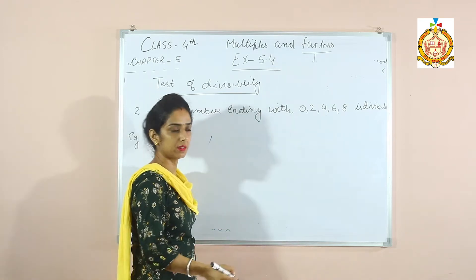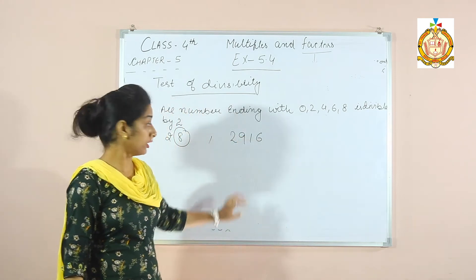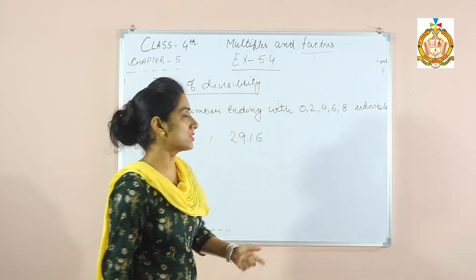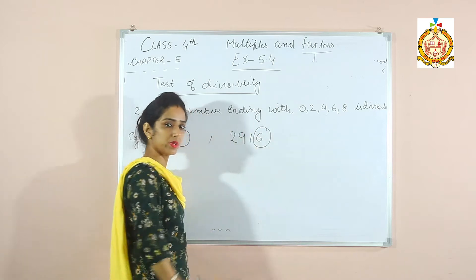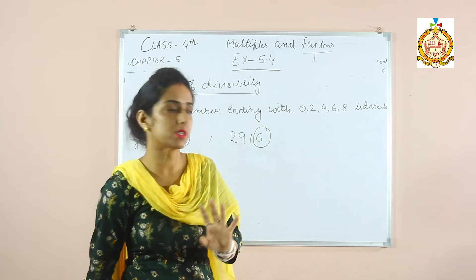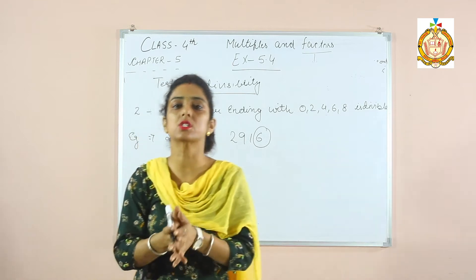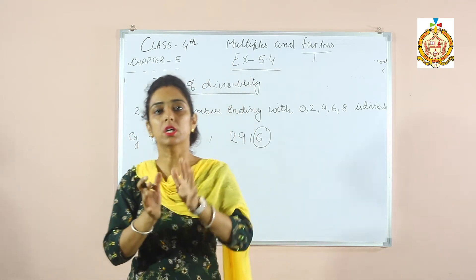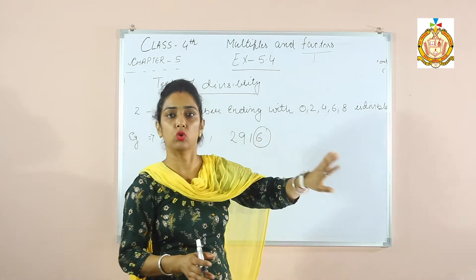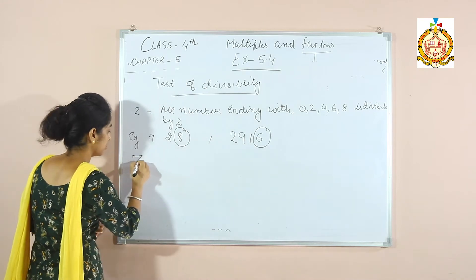Another example: 2916. It is divisible by 2 because its last digit is 6. When we check divisibility by 2, we only look at the last digit — it should be 0, 2, 4, 6, or 8.